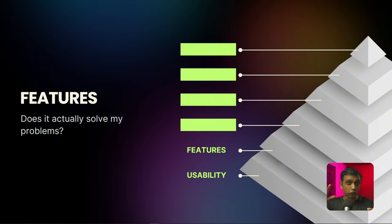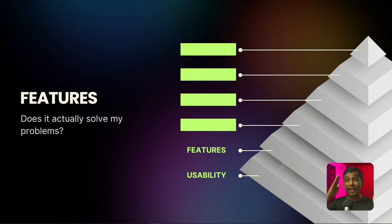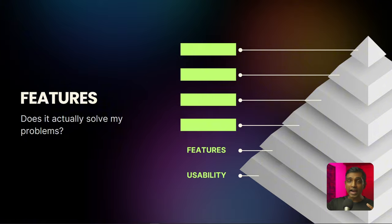So if your software is already live, here's an action item: go look at which features are used most. You will notice that around 10 to 20% of features is what around 80% of people use. Prioritize improving those features instead of trying to add more features or improving the ones that people don't use.